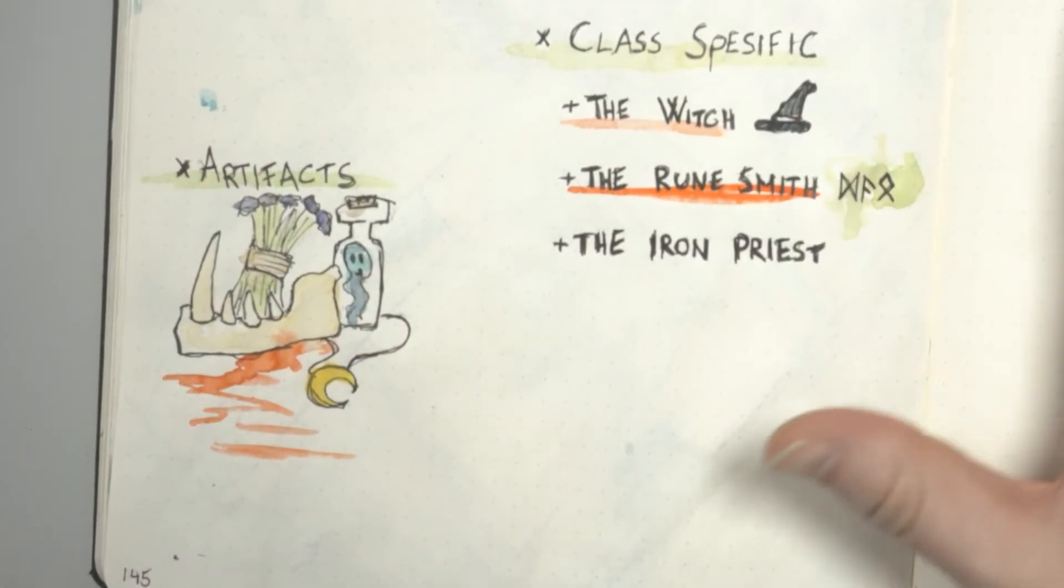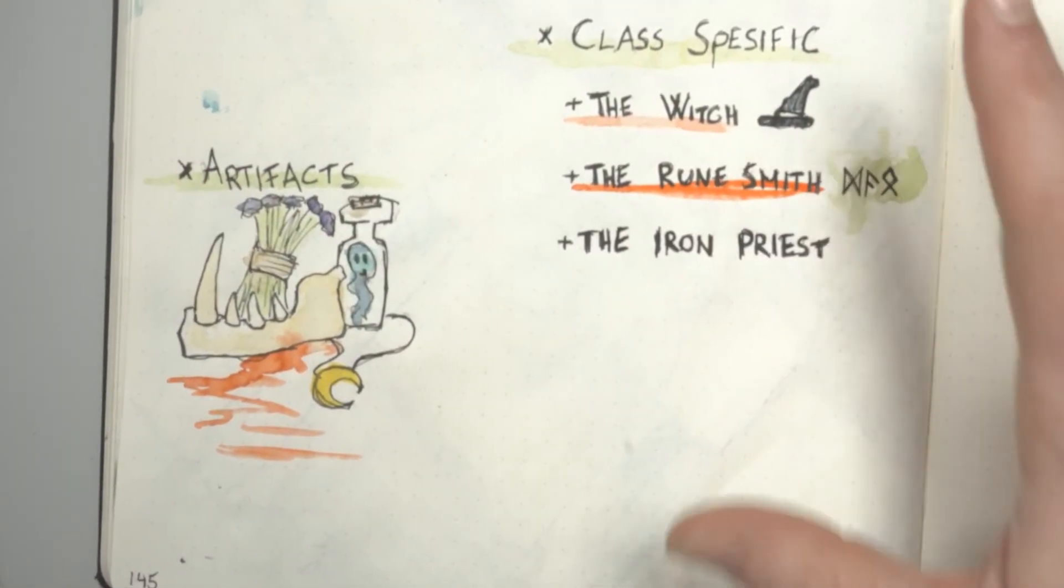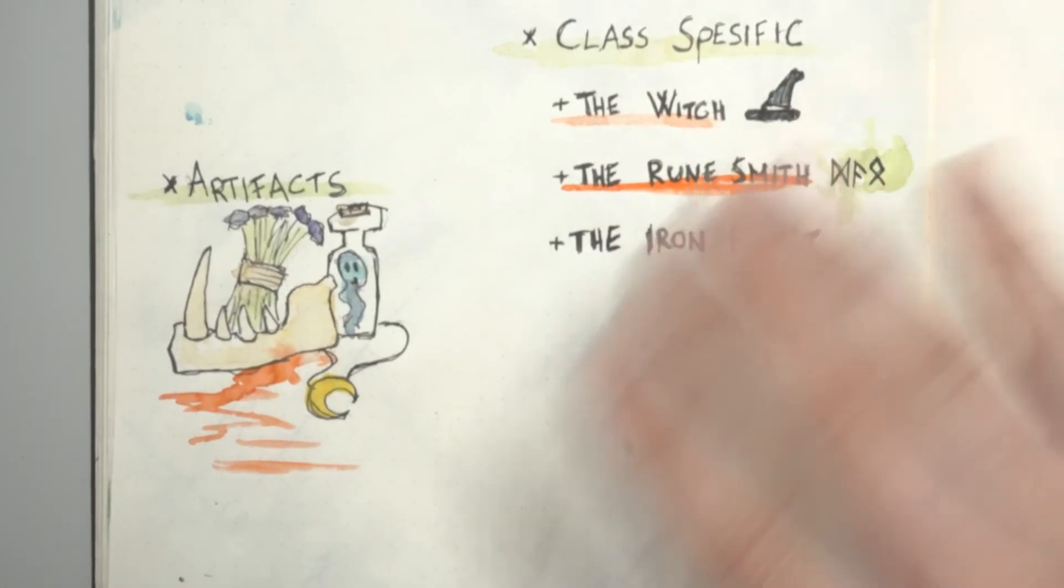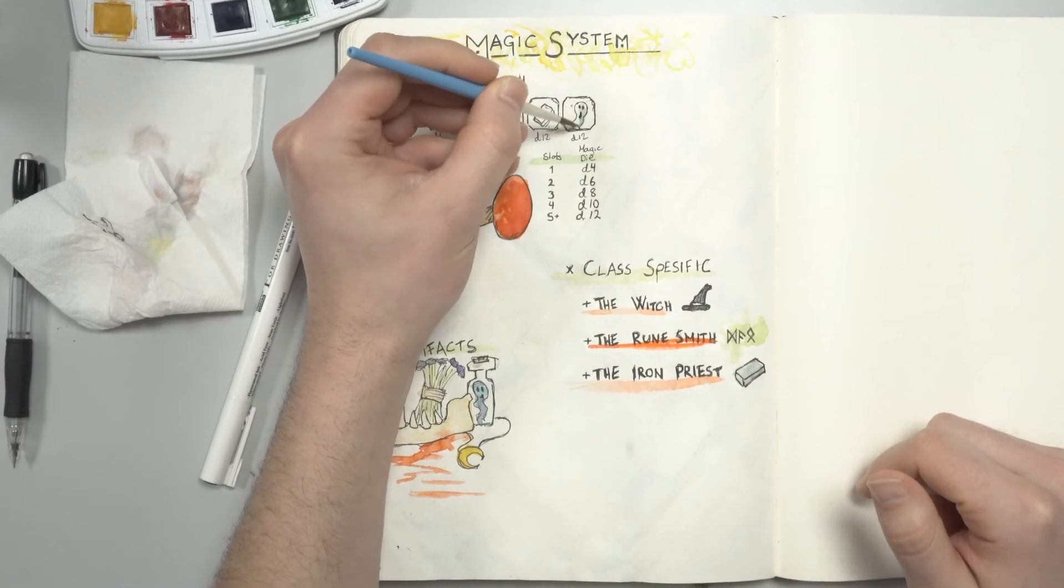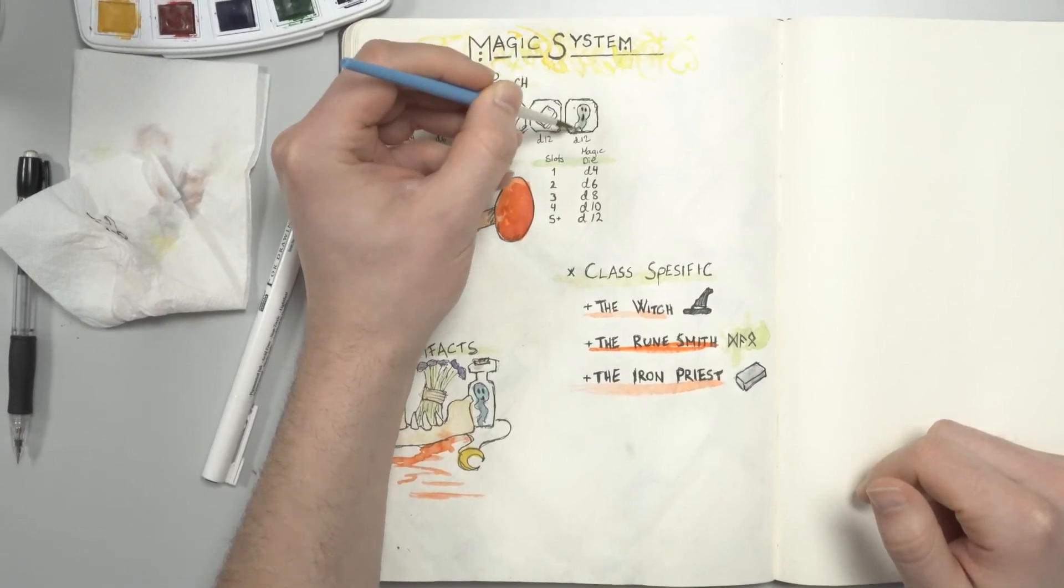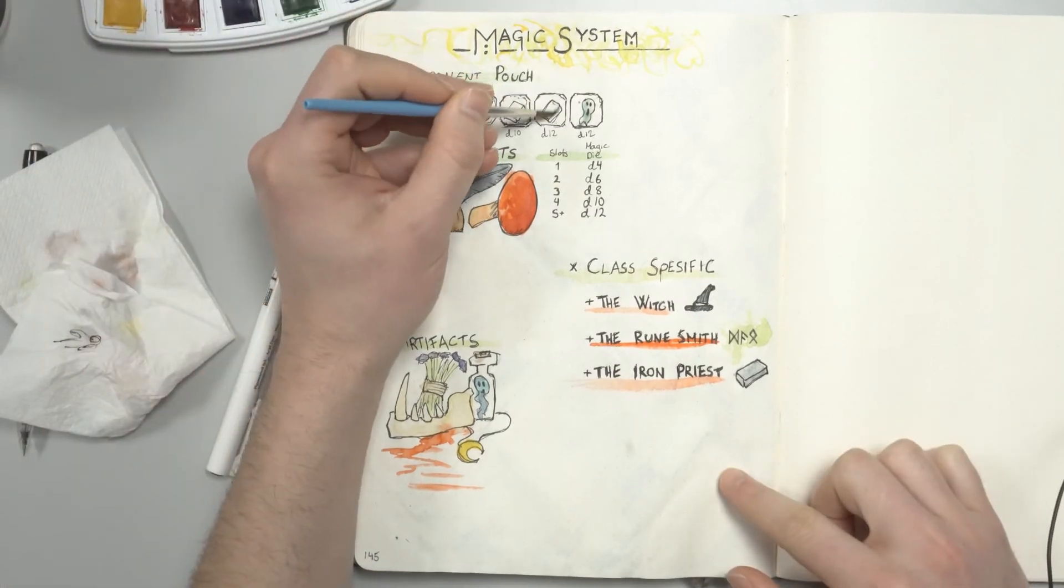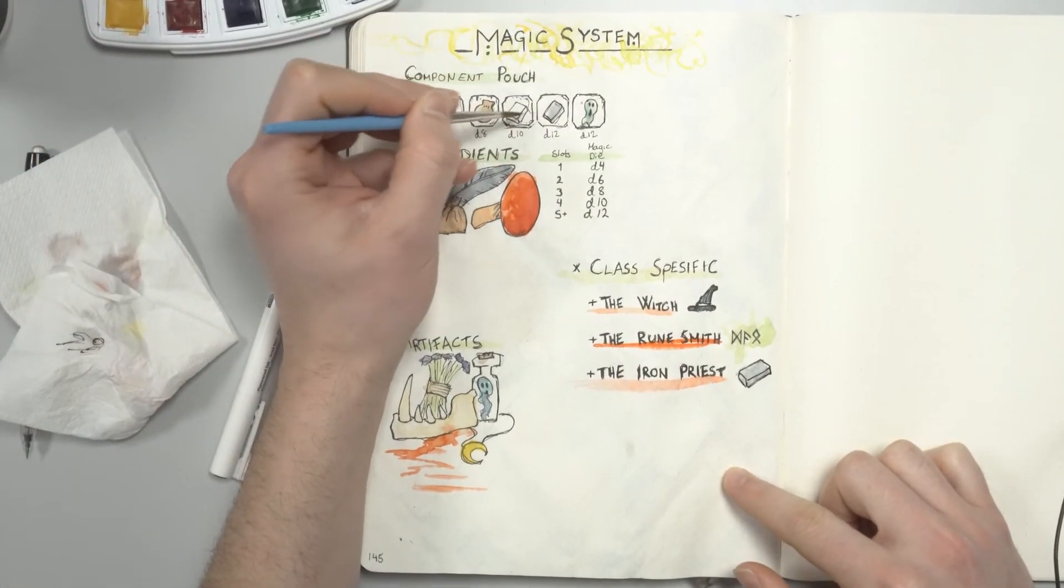I have no idea how to implement this yet, I just know that their component pouch will be full of iron. I'll get back to the mechanics of class-specific components in the next episode, since I haven't figured out the mechanics just yet.